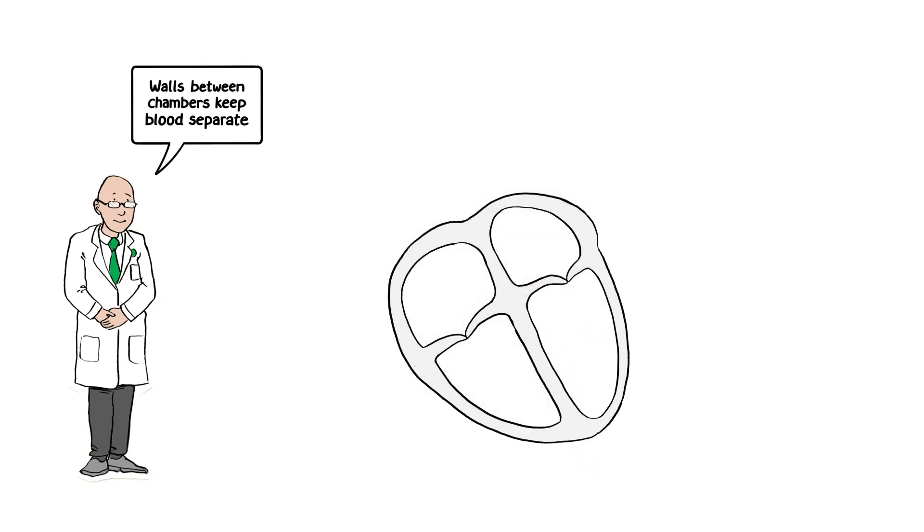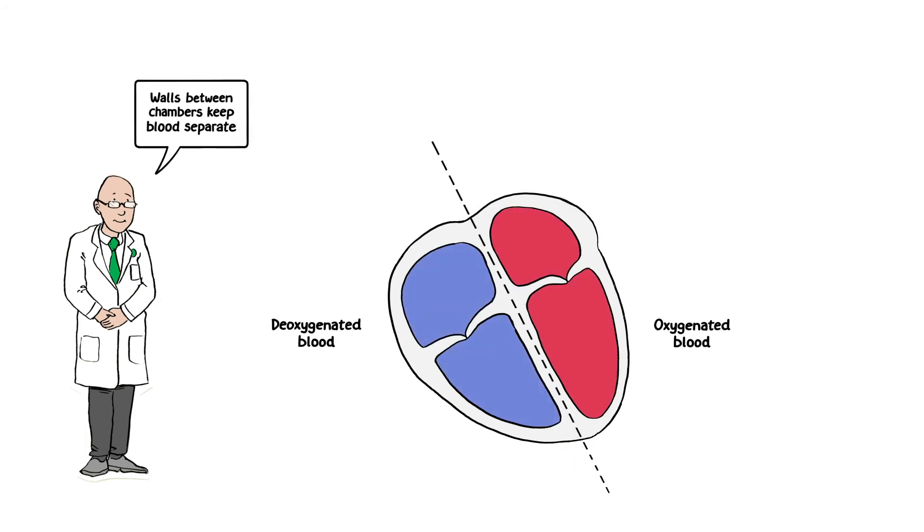Walls between the right and left-sided chambers keep incoming deoxygenated blood separate from oxygenated blood.